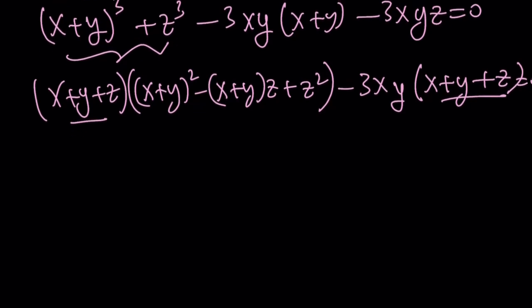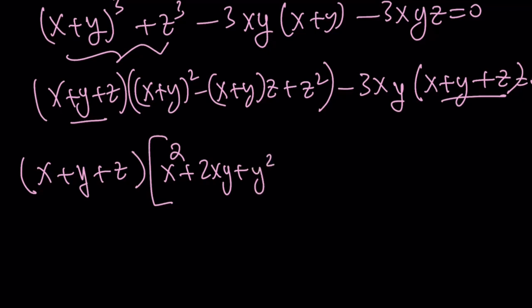If I do that, if I take out x plus y plus z, this is what I get. x plus y quantity squared. Let's go ahead and factor. x squared plus 2xy plus y squared. If you go ahead and distribute it, minus xz minus yz plus z squared. And then I have minus 3xy. Let's go ahead and put that in there and set it equal to zero.